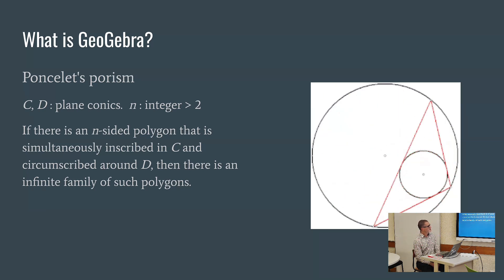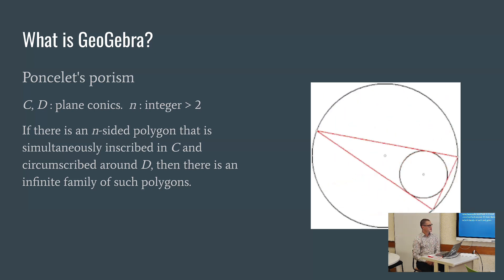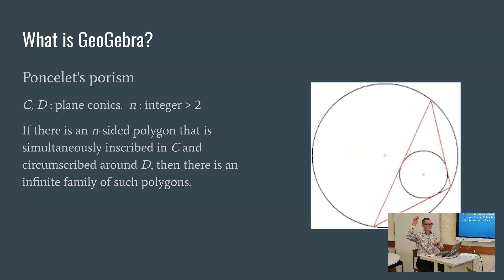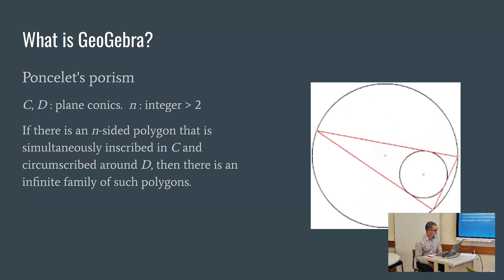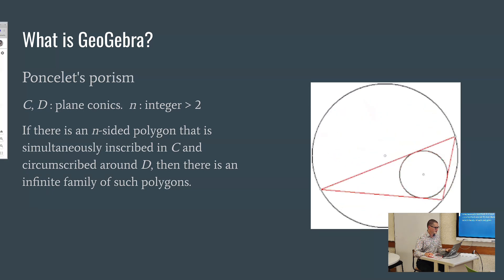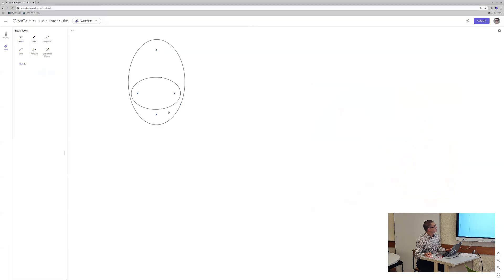So, here is a theorem in geometry, and you can see a little animation there that is demonstrating it. If you have two conics — ellipses, let's say — one inside the other, and if you can draw a triangle that touches the outside ellipse at its points and is tangent to the inside ellipse, then there is an infinite family of those polygons. If you can draw one, you can draw a whole family. I am just going to have a look at that now in GeoGebra.